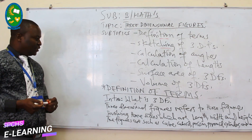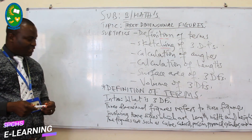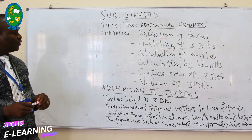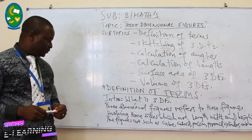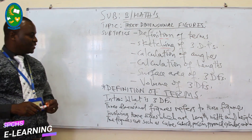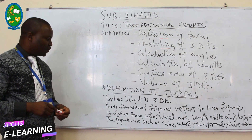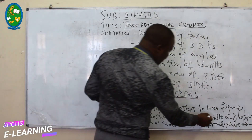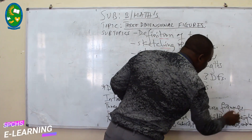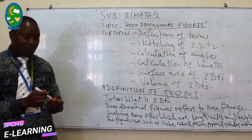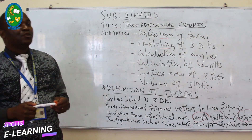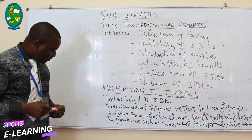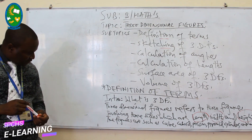Now, in definition of terms, we can start with an introduction. What are three-dimensional figures? Three-dimensional figures refers to figures involving three sides, which are length, width, and height. Any figure which can be calculated by using three sides is known as a three-dimensional figure.